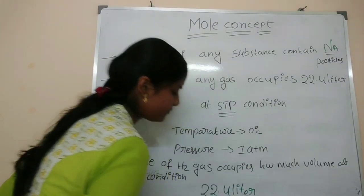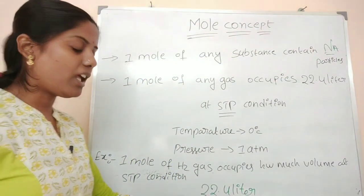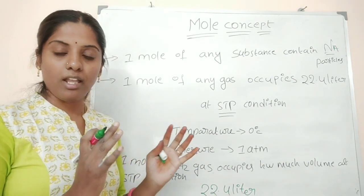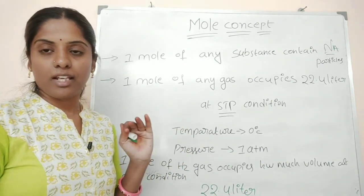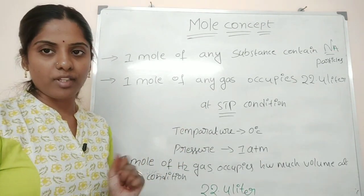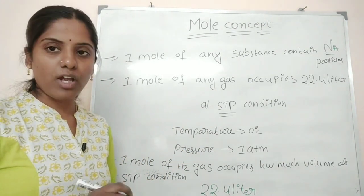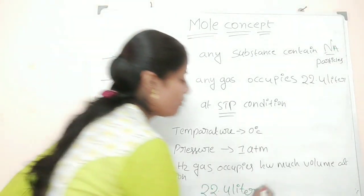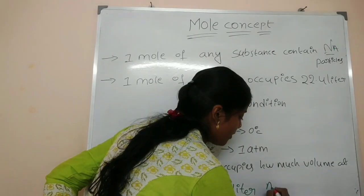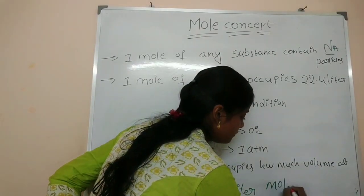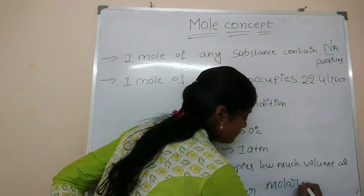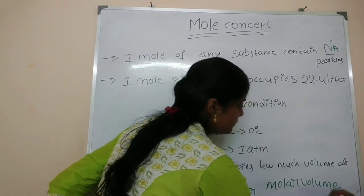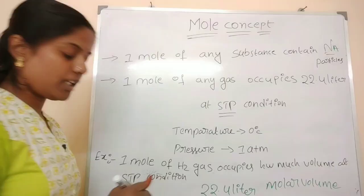If you understand it, you have a 22.4 liter bottle — so a gas is occupied in that volume. This is what we call molar volume.